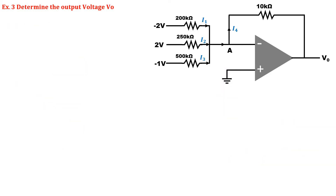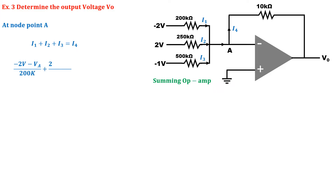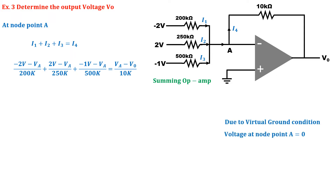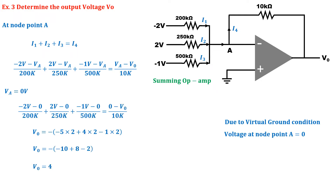Exercise number 3: Three input voltages have been applied instead of one at the inverting terminal. Such an operational amplifier is called a summing operational amplifier. Three currents enter at node point A and one current exits. By node analysis, the sum of I1, I2, and I3 equals I4. I1 is –2 minus Va upon 200 kΩ, I2 is 2 minus Va upon 250 kΩ, I3 is –1 minus Va upon 500 kΩ, and I4 is Va minus Vo upon 10 kΩ. The potential at node point A from virtual ground is 0 V. Solving this gives the output voltage as 4 V.